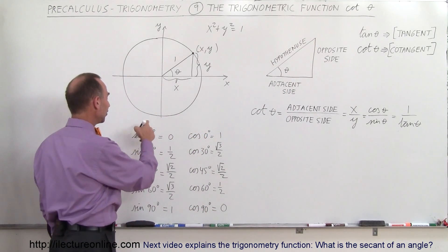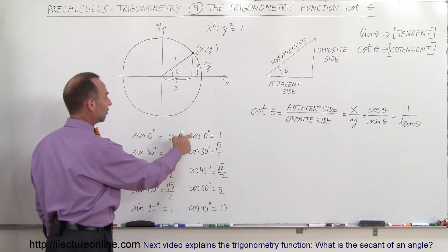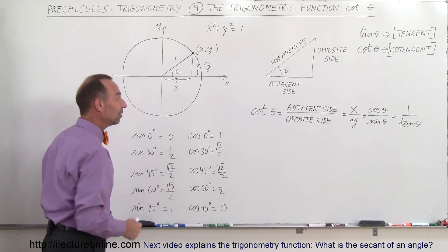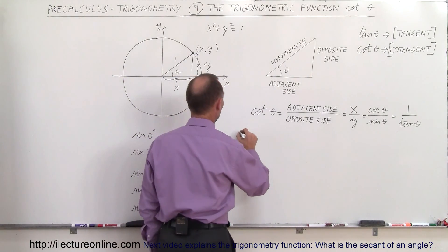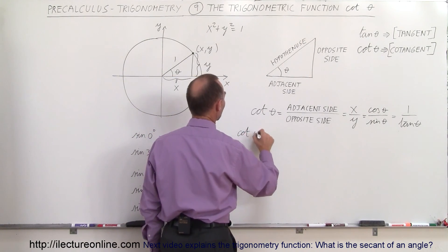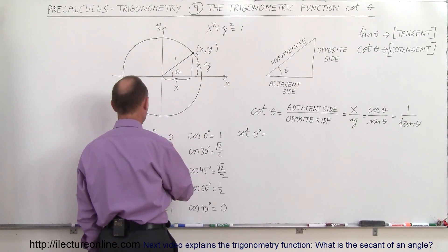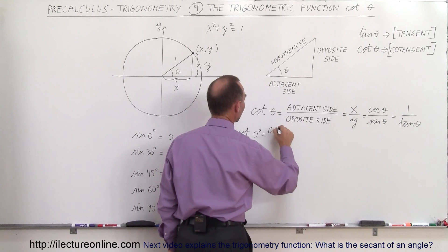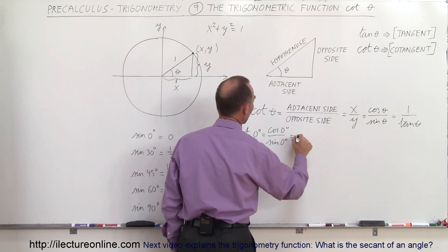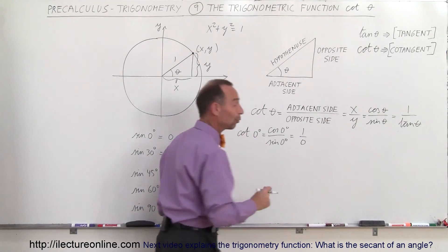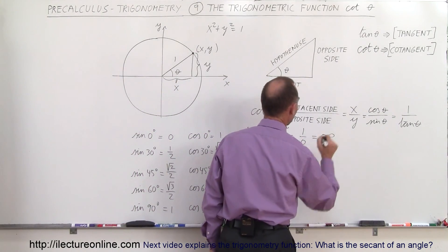Now, if these are the values for the sine of theta and the cosine of theta when angles go from 0 to 90 degrees, what is the cotangent of theta equal to? The cotangent of 0 degrees is equal to the cosine of 0 degrees divided by the sine of 0 degrees, which is 1 divided by 0. And whenever you divide by 0, you get infinity, which is undefined.